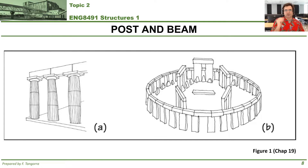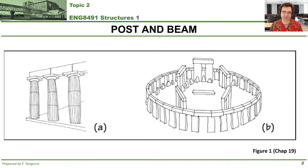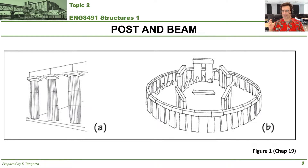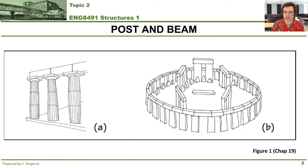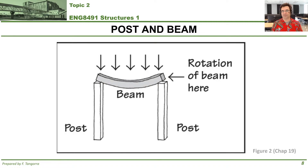Now I want to introduce you to the topic of post and beam construction. It's a very simple but also very important topic. I show two examples from your textbook: Greek and Roman columns and beams on the left-hand side, and a Stonehenge-type structure on the right. Post and beam is literally two posts with a beam on top — that's all there is to it.